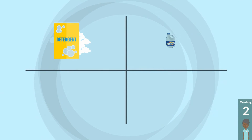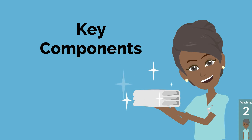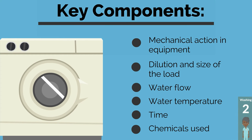To restore soiled items to usable condition, we wash, bleach, rinse, and remove water. There are six key components that must be performed properly in order to have the expected outcome of a finished product that is safe and visually appealing for use. If any of these components fail to occur properly, it will have an effect on the quality of the laundry process. These six components include mechanical action in the equipment, dilution and size of the load, water flow, water temperature, time, and chemicals used.